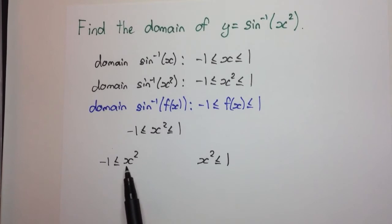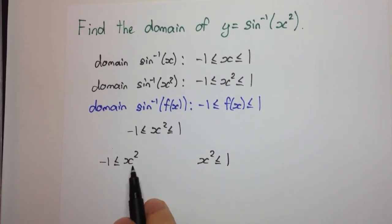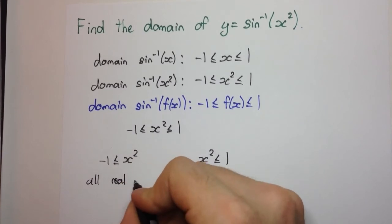Now, when we solve this inequality, what's that going to be? Well, x squared is always greater than negative 1 for all real values of x. So the solution set is all real x.